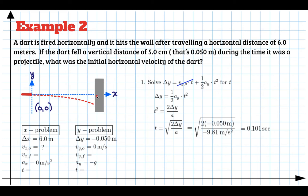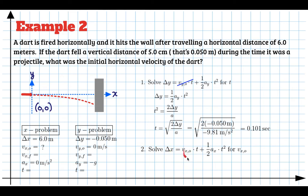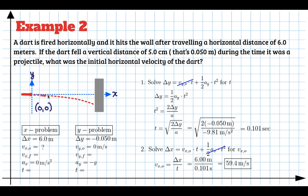Now we solve for the unknown: the initial horizontal velocity. We know the acceleration is zero, we know the time, and we know the horizontal distance. Since acceleration is zero that term drops out, and we divide both sides by t to isolate the initial velocity in x. Plugging in our numbers gives 59.4 meters per second. By firing the dart horizontally and measuring how far it falls across the room, we can calculate its initial velocity.